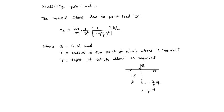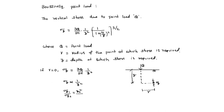Now suppose if R equal to 0, then Sigma Z equal to 3Q by 2 Pi into 1 by Z square. That means Sigma Z is proportional to 1 by Z square. So if Z varies, Sigma Z varies with 1 by Z square, giving the comparison formula: Sigma Z1 by Sigma Z2 equal to Z2 square by Z1 square. This formula can be used to compare stress at two different depths.